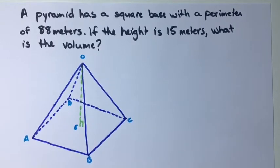All right, in this example we have a pyramid with a square base that has a perimeter of 88 meters. If the height of the pyramid is 15 meters, what is the volume?